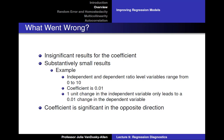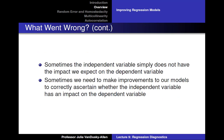Another problem you can run into when you are running your regression is that the coefficient turns out to be in the wrong direction and significant in that direction. The unexpected result of a regression analysis could mean that the independent variable does not have a true impact or a true strong impact on the dependent variable. Alternatively, it may still have the impact we expect, but we need to make improvements to our regression model in order to properly determine whether that impact exists.